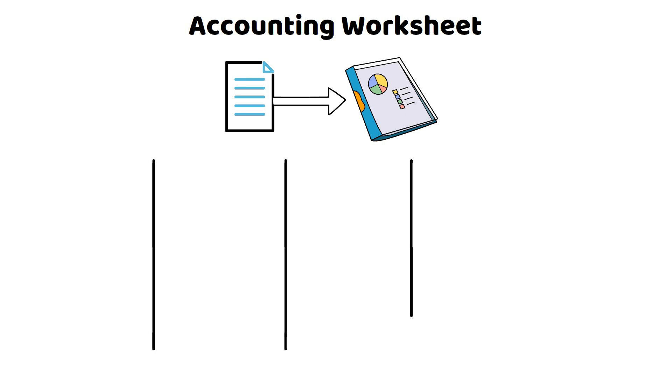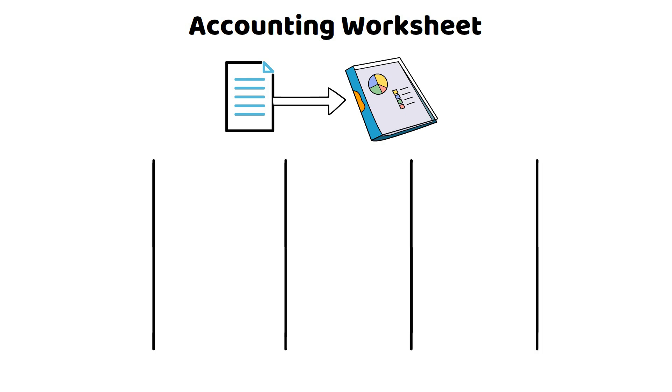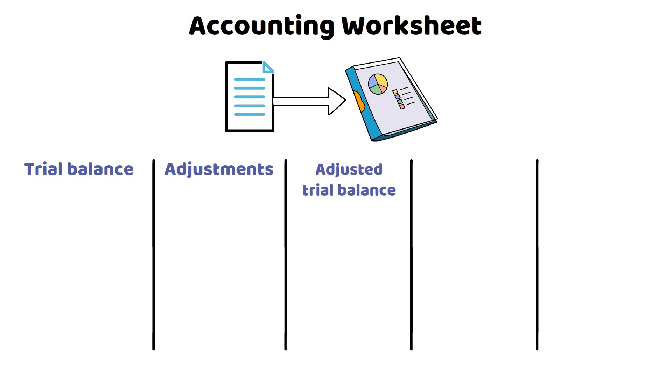The worksheet typically contains five columns: the Trial Balance, Adjustments, Adjusted Trial Balance, Income Statement, and Balance Sheet.